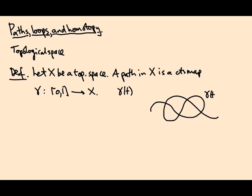So this is gamma of t. Think of it as a parametric curve. And the requirement is that gamma depends continuously on this variable t.